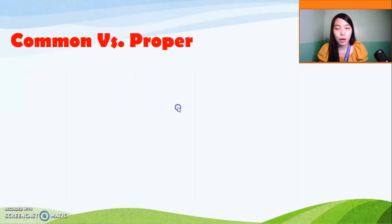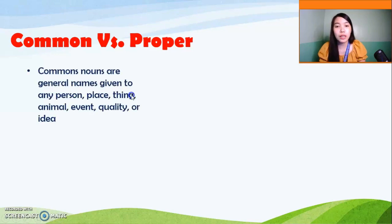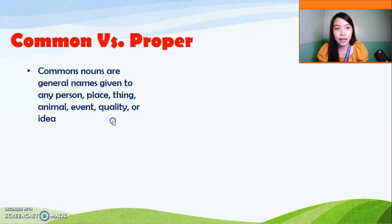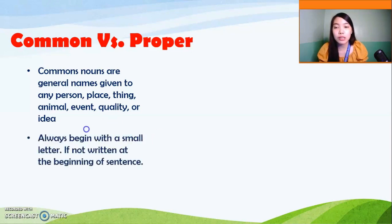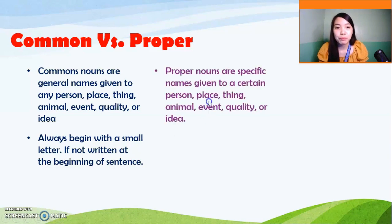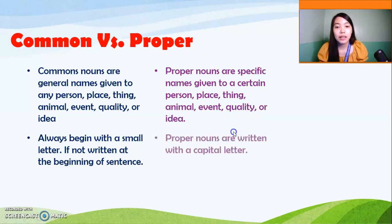Let us first look at common versus proper nouns. When we say common nouns, these are general names — the general names given to any person, place, thing, animal, event, quality, or idea. Remember that common nouns, if not written at the beginning of a sentence, are not capitalized. When we are talking about proper nouns, these are specific names given to a certain person, place, thing, animal, event, quality, or idea, and they are always written with a capital letter.